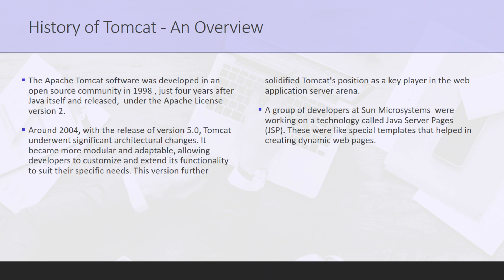A group of developers at Sun Microsystems — currently known as Oracle — were working on a technology called Java Server Pages, known as JSP. These pages are like special templates that help in creating dynamic web pages. To run these pages smoothly, they needed a server, and that's where Apache Tomcat came into the picture. Today, Apache Tomcat is widely used by developers to host web applications, serving as a reliable and particular tool in the world of web development.